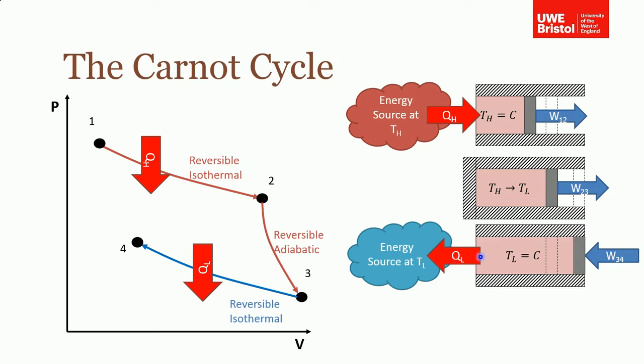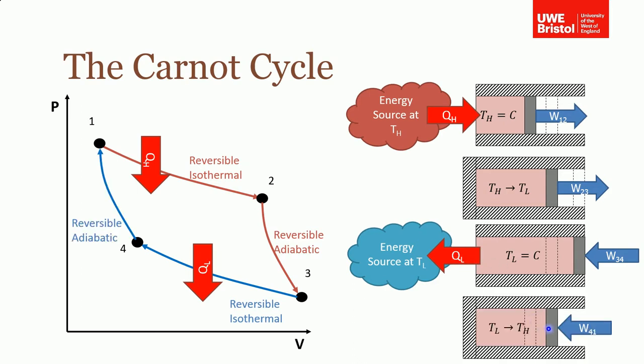Then the final process is that the reservoir sink is removed, the insulating cap is put back on, and the gas has continued to be compressed till it reaches its original temperature TH, so it gets back to its original state. So that's the cycle: reversible isothermal heat addition, work is done, reversible isothermal heat rejection, and work is done on the piston to bring it back to its original state.